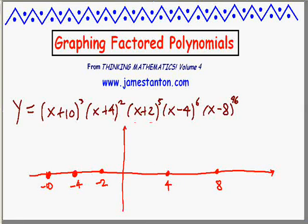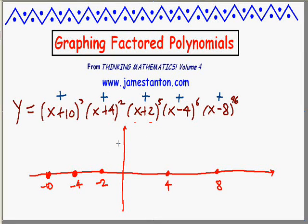Well, suppose I put in x = 0. The first term is going to be positive: 10 cubed. The next term is going to be positive: 4 squared. This term will be positive. Anything to the 6th will also be positive — (−4)⁶ is a positive number, and (−8)⁹⁶ is a positive number. So I can now at least say, the y-intercept will be 10³ × 4² × 2⁵ × (−4)⁶ × (−8)⁹⁶, which is going to be some huge positive number. So at least I know the graph crosses the y-axis at some positive value.